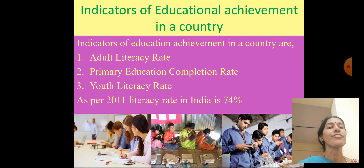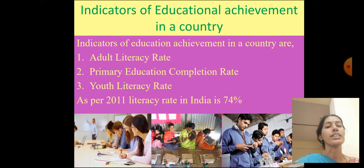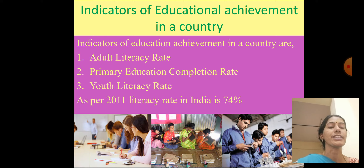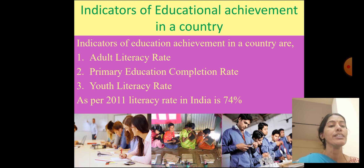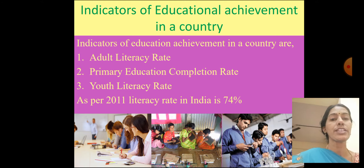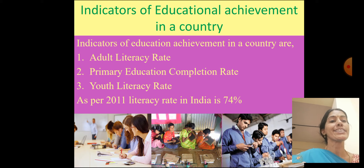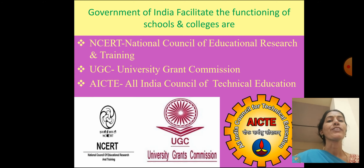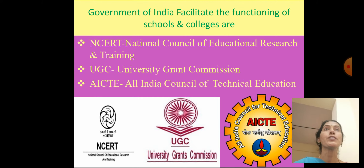What are the indicators of educational achievement in a country? One is adult literacy rate, primary education completion rate, and youth literacy rate. As per the 2011 census, the literacy rate in India is 74 percent. These are the indicators of educational achievement in a country — if a country's adult literacy rate, primary education completion rate, and youth literacy rate are high, its educational achievement is at a decent level. The government of India has facilitated improvements in the quality of education.